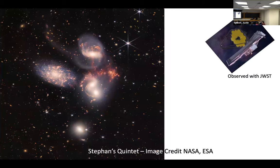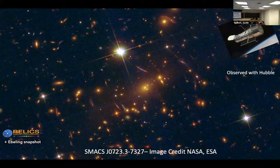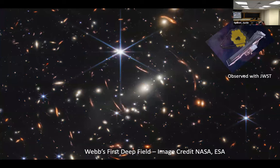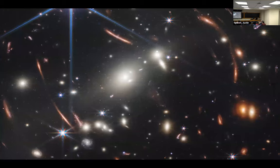This one is a bit closer to home — we see a lot more detail in the expanding trail from this exploded star. And then we see galaxies: here again with Hubble, and with JWST you see a lot more detail, these fiery trails and merging galaxies. And then we go to a galaxy cluster — this is actually one I observed as part of my RELICS Hubble Treasury program. This was Webb's first deep field, and a lot of people were surprised it would be a galaxy cluster rather than a blank field.